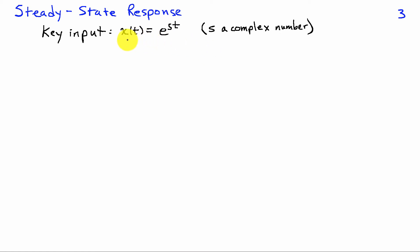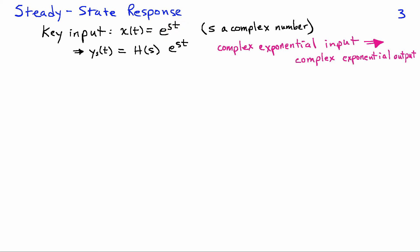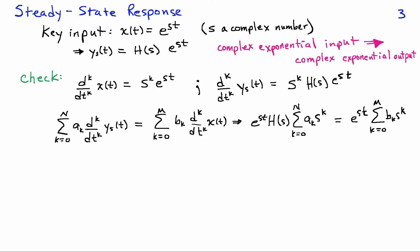The particular type of input we're going to consider is x(t) = e^(st), where s is some complex number. That input has a very simple form for the output: the steady-state response is H(s), some function of s, times e^(st). So if I apply this complex exponential input in a steady-state scenario, I end up with a complex exponential output. We can verify that this solution satisfies the differential equation by noting that the k-th derivative of x(t) is s^k times e^(st).